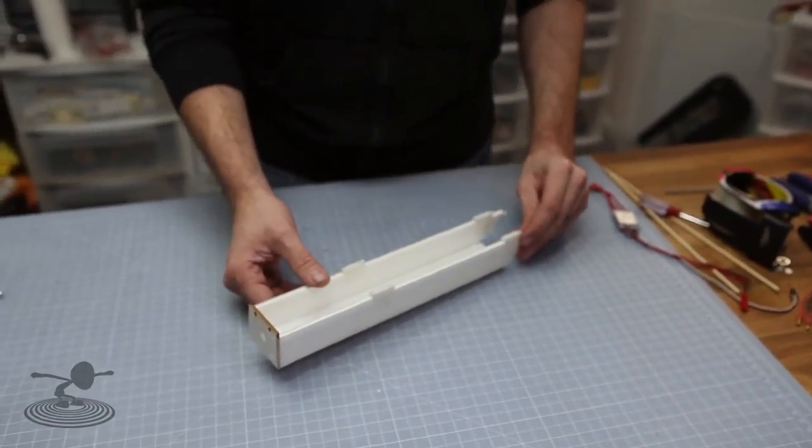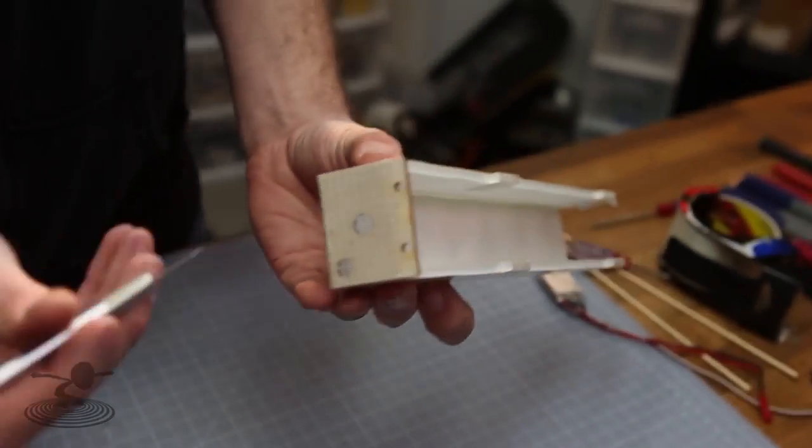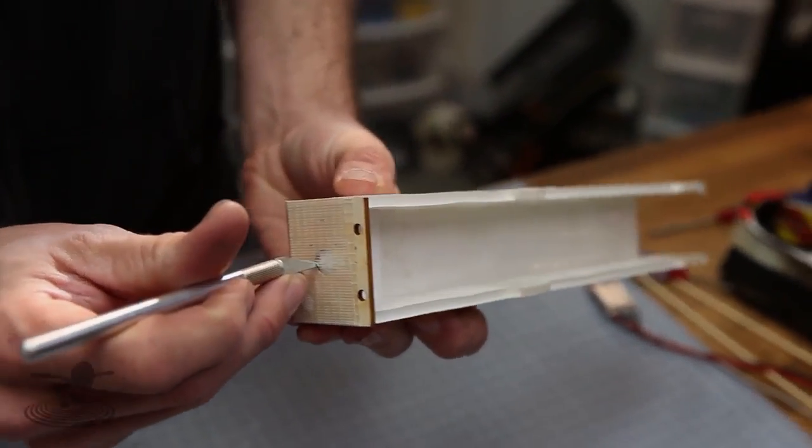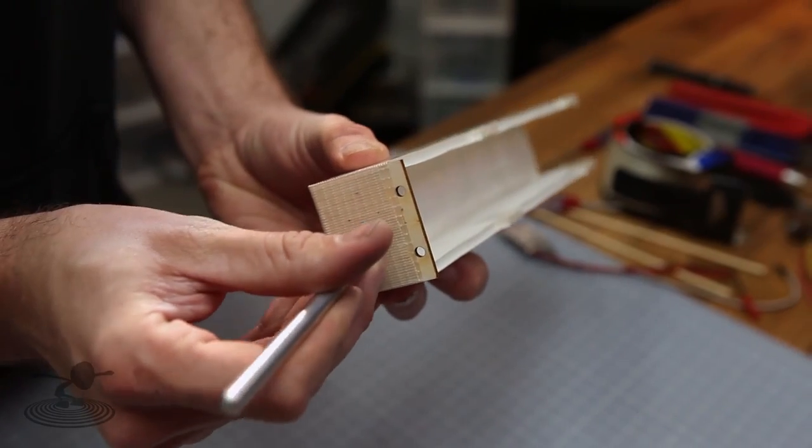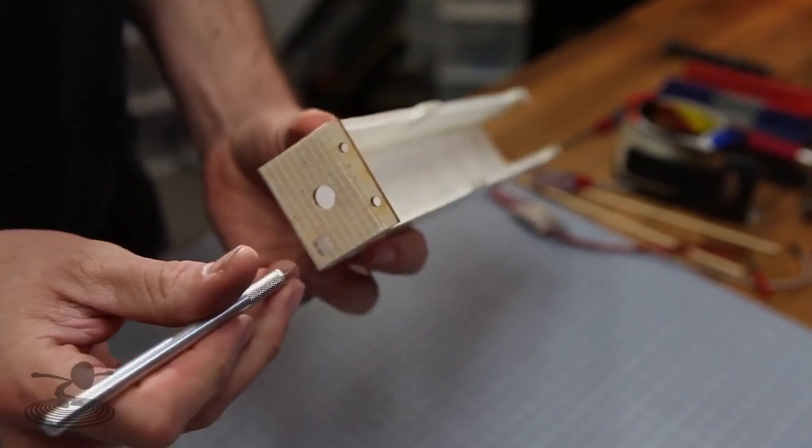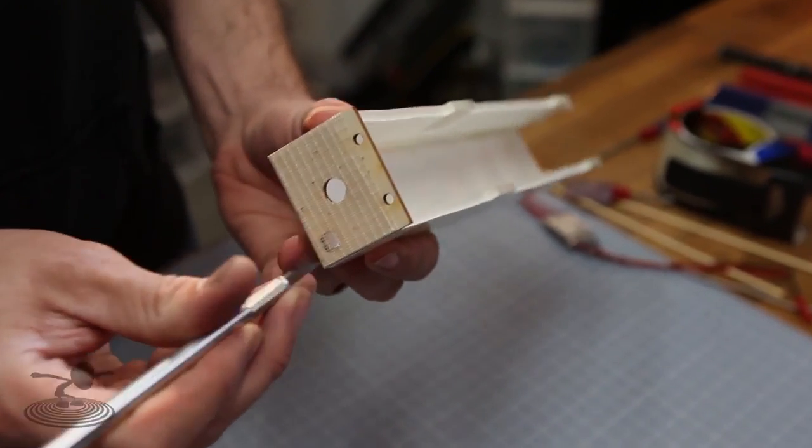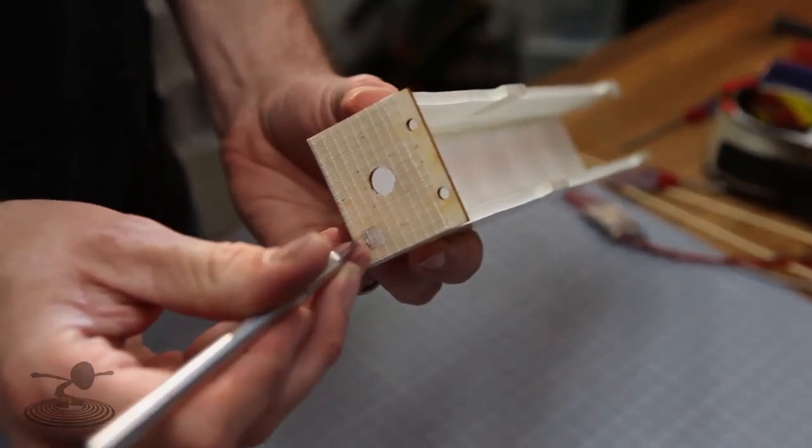Our next step is to install our motor. But first before we do that, we got to clear out the area we just covered up with our tape. So a nice sharp exacto knife will do the job just fine. This is where our wires are going to pass through, so we're going to clear this area out as well.